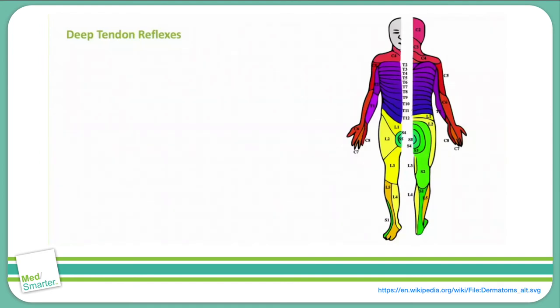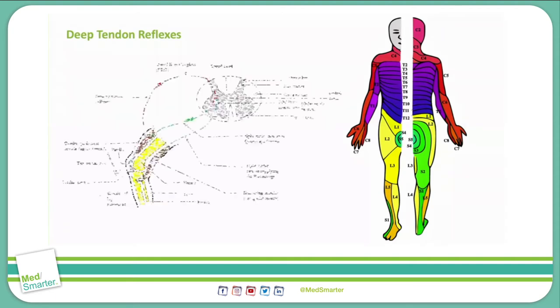Understanding deep tendon reflexes and localizing problems based on physical exam findings is a key practical skill. This topic is critical not only for Step 1 but also for future practice, no matter what specialty you end up in. I can't count the number of times I've had questions about localizing lesions from abnormal reflexes on Step 1, Step 2, and shelf exams, not to mention in the clinical setting.